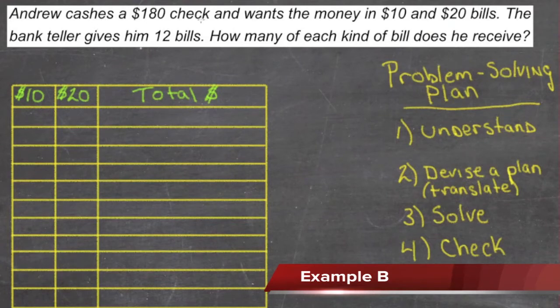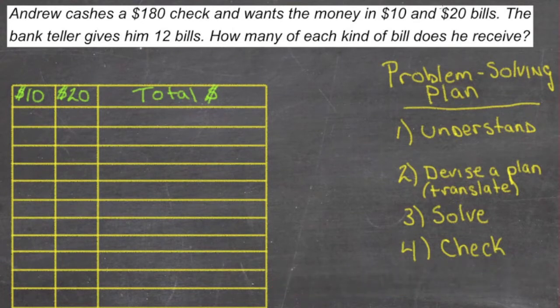Andrew cashes a $180 check and wants the money in $10 and $20 bills. The bank teller gives him 12 bills. How many of each kind of bill does he receive?